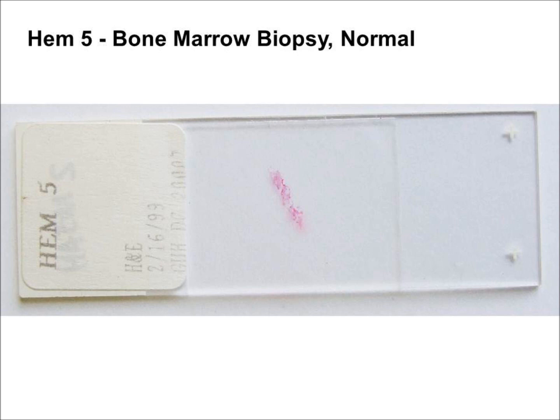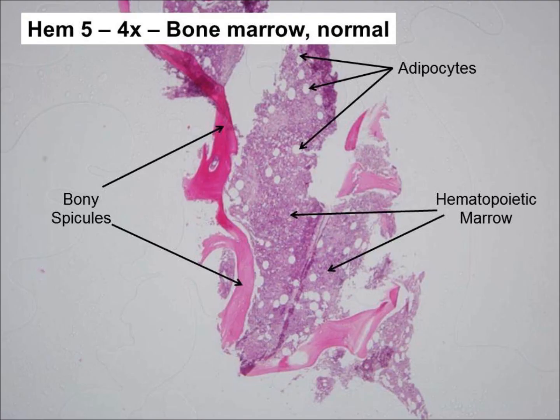Examine the slide labeled HEME-5. This is a needle biopsy of normal bone marrow; however, the preservation is not all that good. Under low magnification, observe the bony spicules, which are intensely eosinophilic. Also identify the adipocytes, which appear as holes in the tissue. Assess the degree of cellularity by comparing the relative areas occupied by the hematopoietic tissue versus the empty space occupied by adipose tissue. In this section, the cellularity is approximately 90–95%, which is rather high, though this may or may not be normal depending upon the age of the individual.